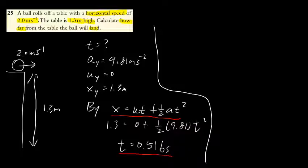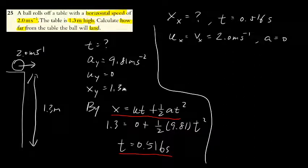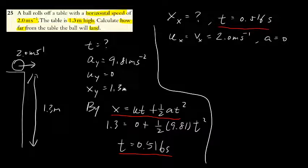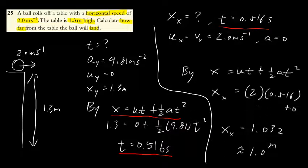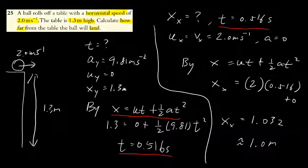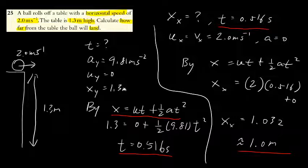And you move on looking at the horizontal movement — just now we were looking at the vertical one. For the horizontal one, these are the information you know, and now you know the time is equal to 0.516 seconds. Therefore, you can apply it to the equation, and you can find the horizontal movement, which will be 1 meter.